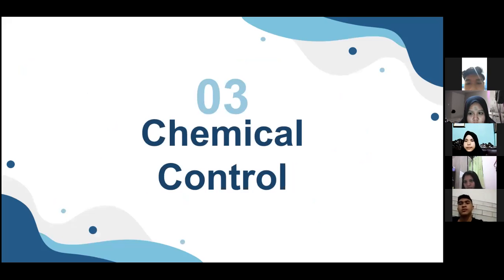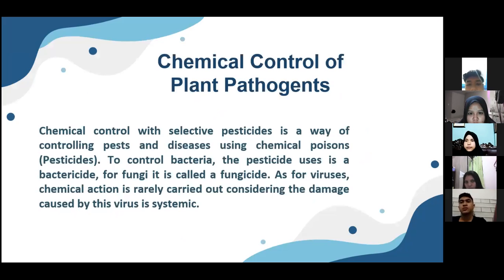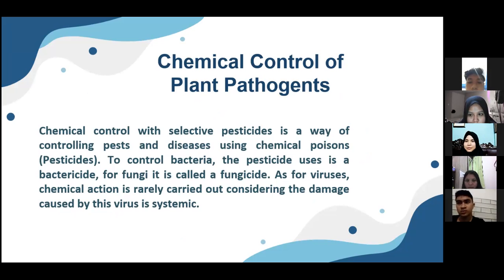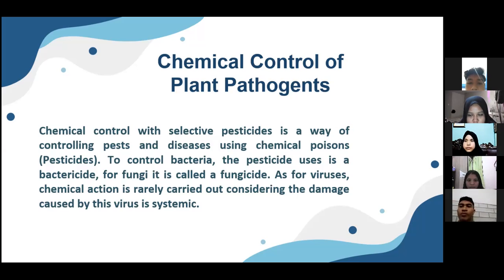Number three is chemical control. Chemical control of plant pathogens with selective pesticides is a way of controlling pests and disease using chemical poison or pesticides. To control bacteria, the pesticide used is a bactericide; for fungi, it is called a fungicide. As for viruses, chemical action is rarely carried out considering the damage caused by viruses is systemic.